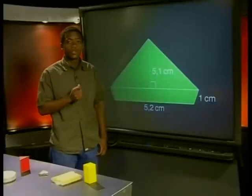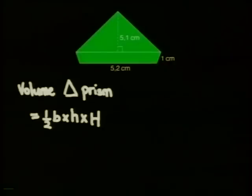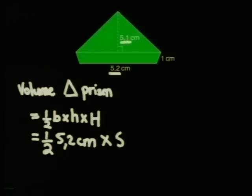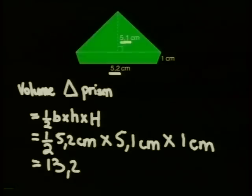Now we can substitute the values given in the diagram into the formula for the right triangular prism. So we have half multiplied by the base of the triangle which is 5.2 centimeters, multiplied by the perpendicular height from the base which is 5.1 centimeters, multiplied by the height of the triangular prism which is 1 centimeter, which equals 13.26 centimeters cubed.